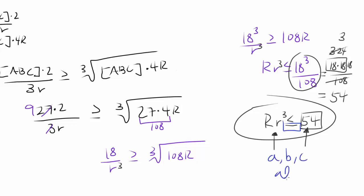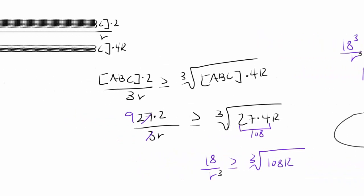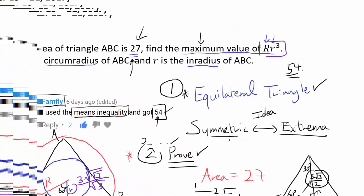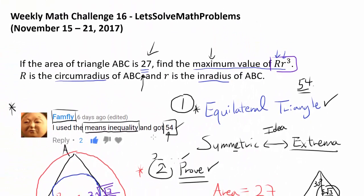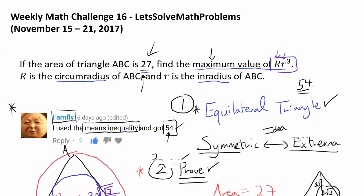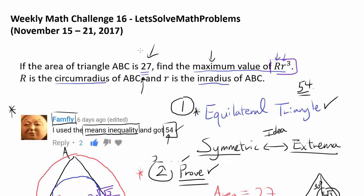Equality holds when a, b, and c are all the same — that is, when the triangle is equilateral. So to summarize: we first used the equilateral triangle, motivated by symmetry, to get 54. Then we used AM-GM inequality with the given area of 27 to prove that the maximum value is indeed 54, occurring only for the equilateral triangle. Thanks for watching.